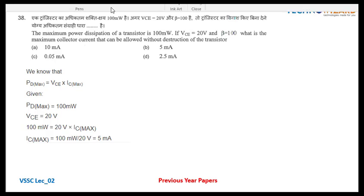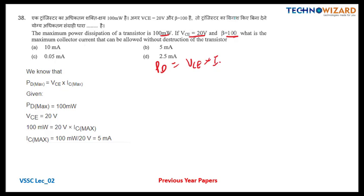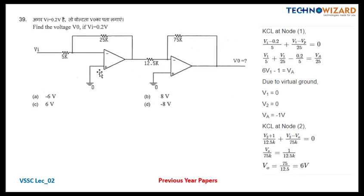Question number 38: the maximum power dissipation of a transistor is 100 milliwatts, VCE = 20 volts, beta = 100. Find the maximum collector current. Using P = VCE × IC_max: IC_max = 100 mW / 20 V = 5 milliamperes — that is the correct answer.